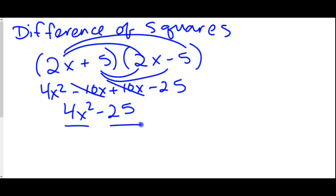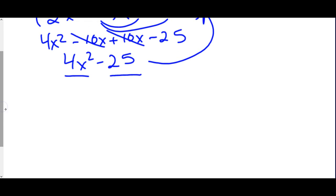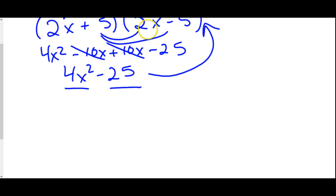Notice we're down to two terms. When we have two terms, it could be just a greatest common factor problem, but we should keep in mind that it might be a difference of squares problem, and we want to try to get it back to the original form. Looking at 4x², we want to get it back to 2x and 2x — those have to match. We're looking for two identical things multiplied together to equal 4x², and the same logic applies to 25.